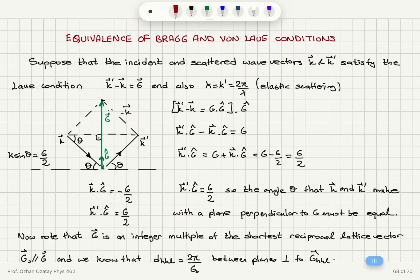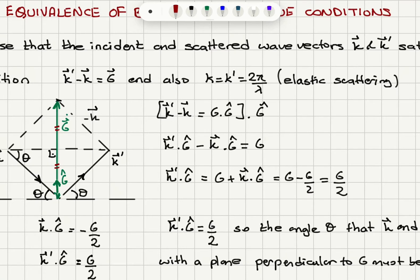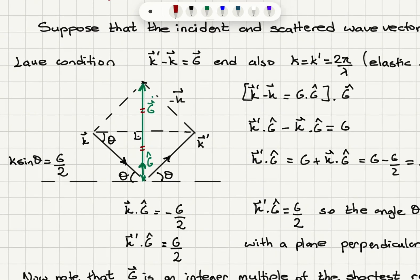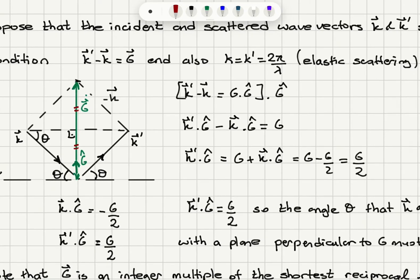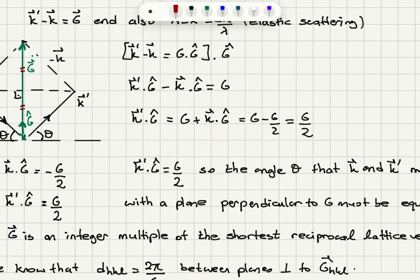The perpendicular bisector is a plane called the Bragg plane. Since k prime minus k is in the g-hat direction, if we take the dot product of this equation with g-hat, we get k prime dot g-hat minus k dot g-hat equals g. From the figure, k prime dot g-hat equals g over 2, and k dot g-hat equals minus g over 2.